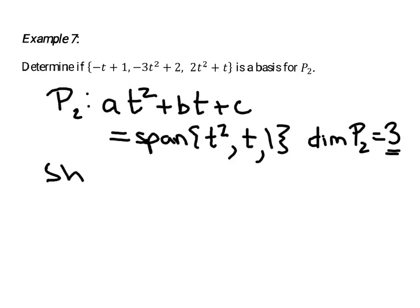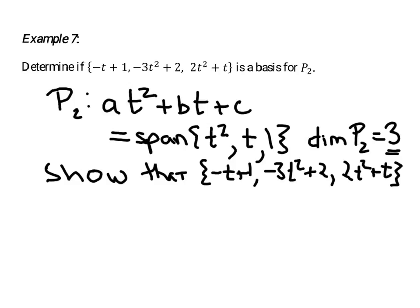So I'm going to show that that collection in the example is a basis by showing that that collection: negative t plus 1, negative 3t squared plus 2, and 2t squared plus t is a linearly independent set. To me, that's maybe the most questionable fact related to this being a basis, and so I want to try to prove that.